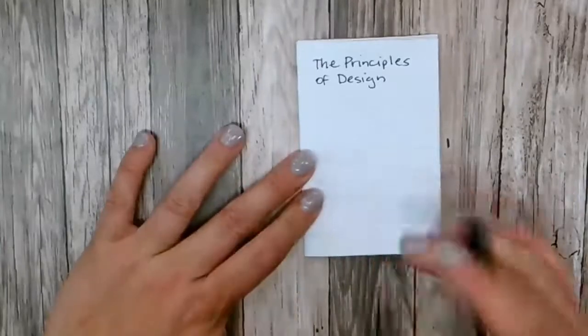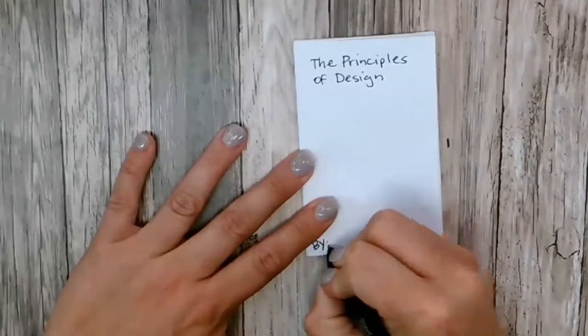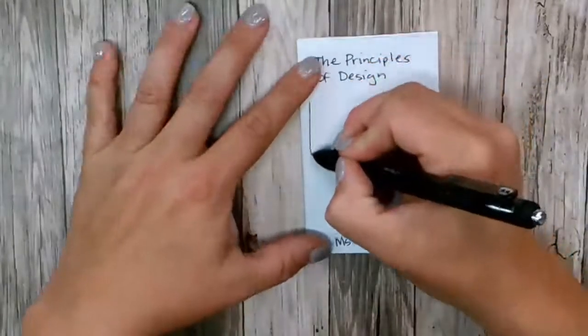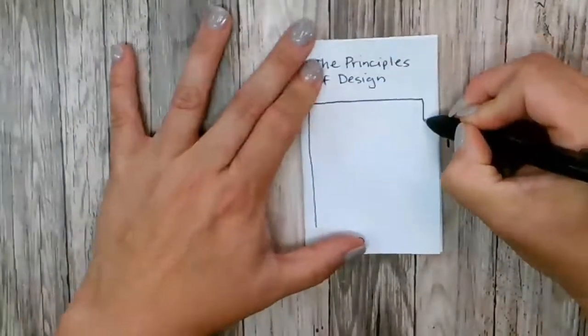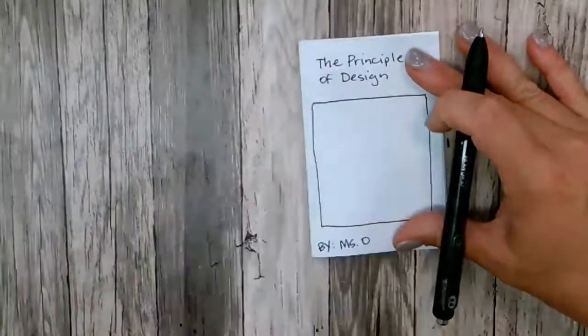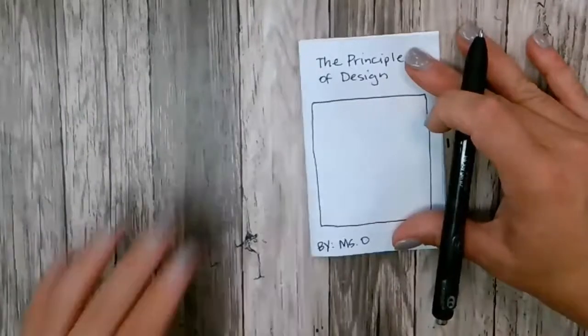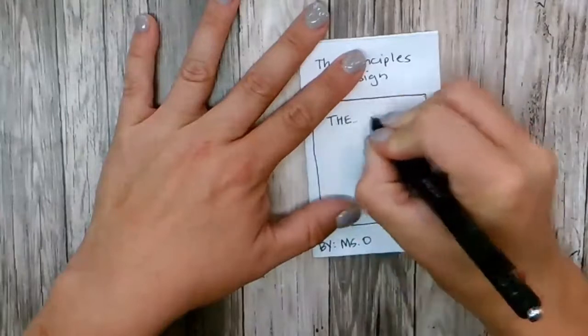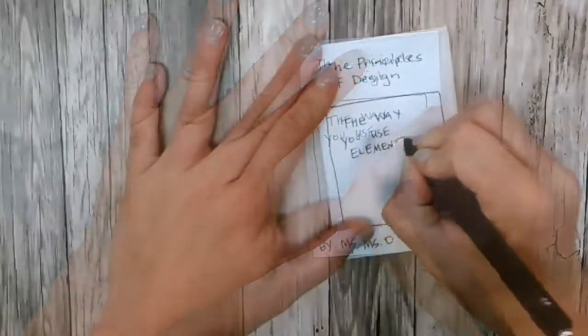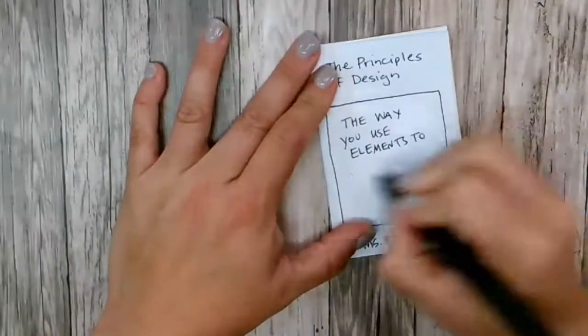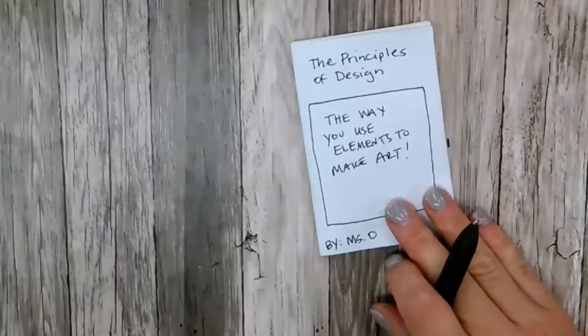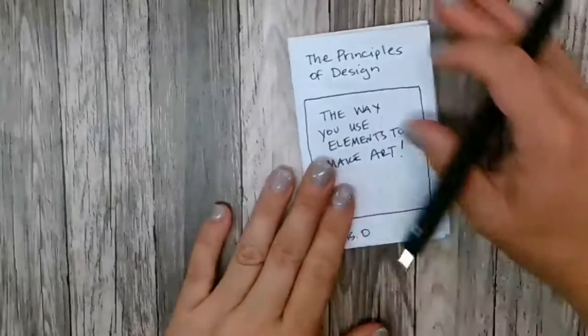And down at the bottom, we're going to put our name, just put by, and I'll just put my name. And in the center, we're going to draw a frame, doesn't have to be perfect. And we're going to write the definition of the principles of design, which is the way you use elements to make art. Okay, so the way to use elements to make art. All right, if you need to pause it, you can do that. I'm going to move on.